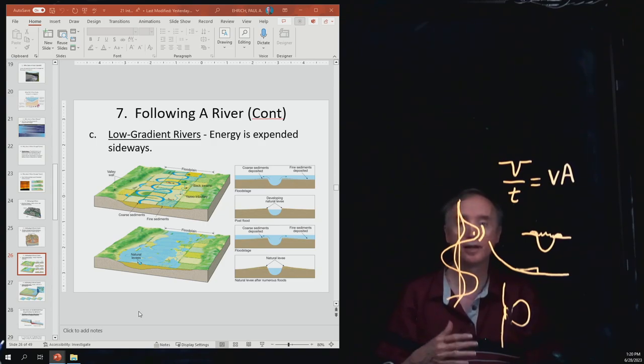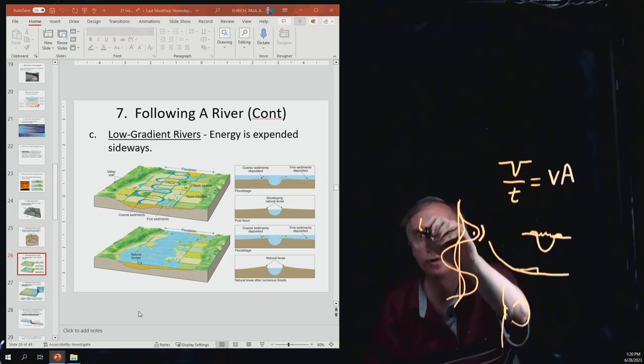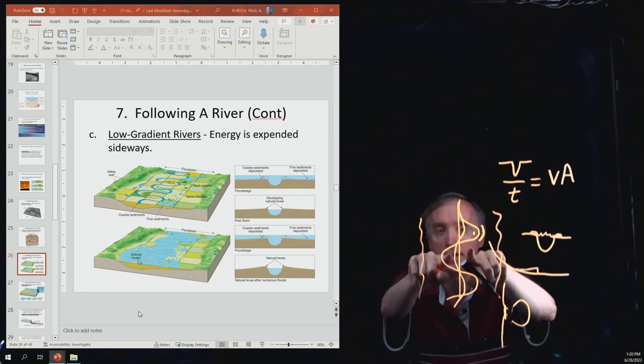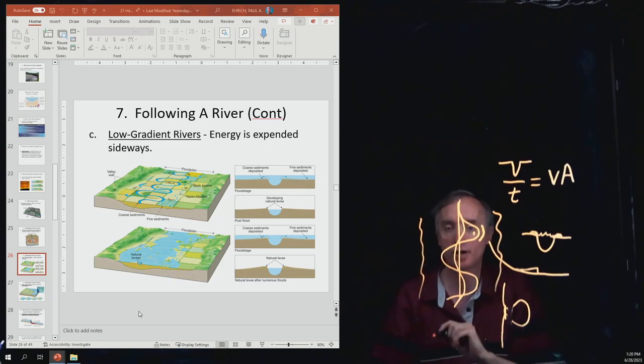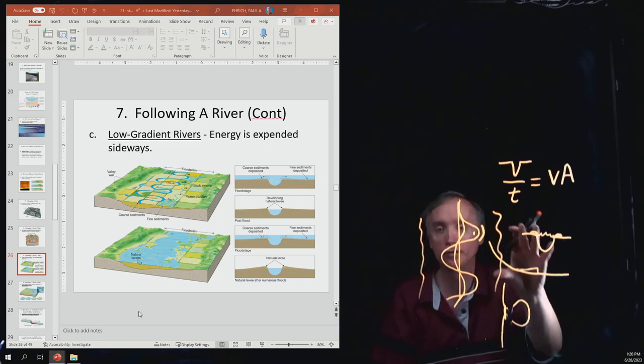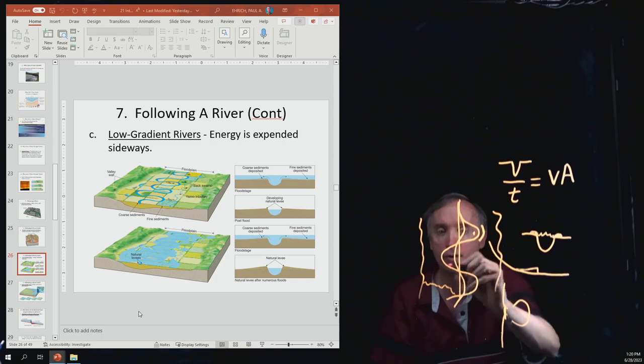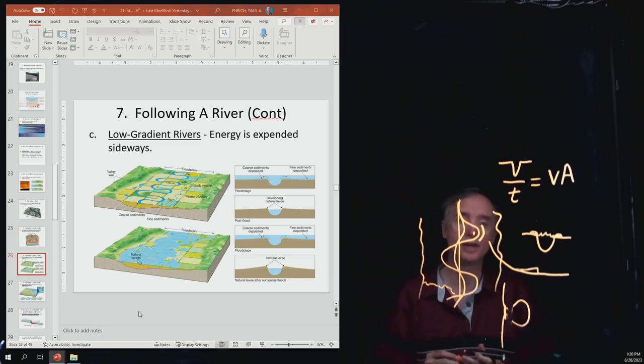Another word I'd like for you to know for the exam is a Yazoo tributary. So a Yazoo tributary are little rivers over here, and over here, that parallel the main river. And then what their job is, is that when a flood occurs, and the floodplain is flooded, then these little rivers can drain the water back into the main channel.